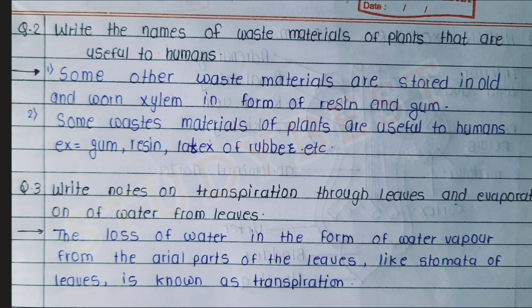Question three: write notes on transpiration through leaves and evaporation of water from leaves. The answer: the loss of water in the form of water vapor from the aerial parts of the plant, like stomata of leaves, is known as transpiration.